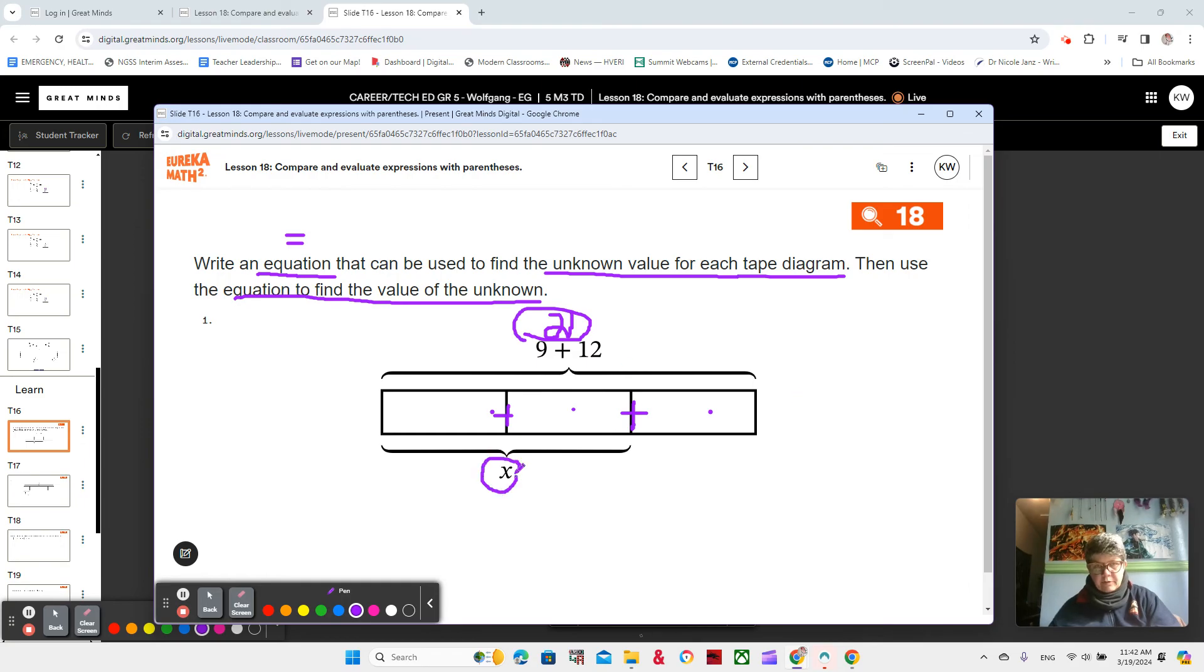And we see that we have three sections that we're adding together because they're next to each other. So we could think of this as like an addition sign, right? And that they are going to equal a total of 21. We have an unknown value here that's represented by X. And the unknown value is two of the three parts. See that? Two-thirds.